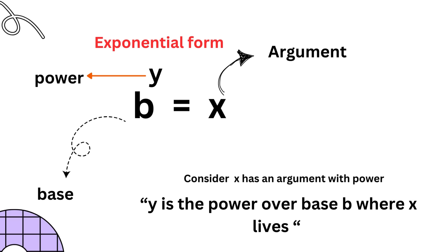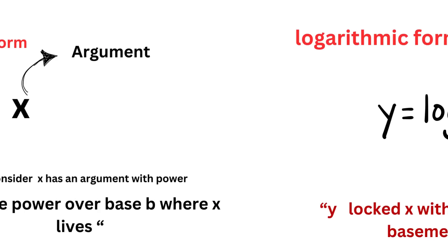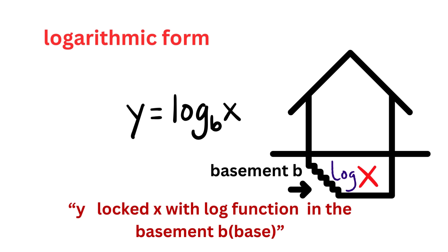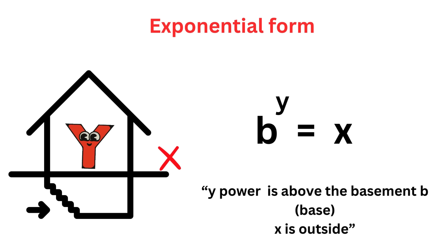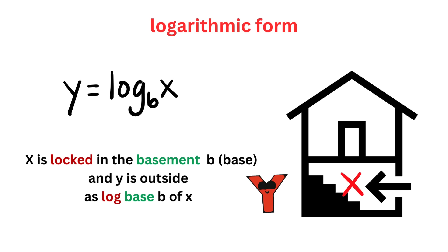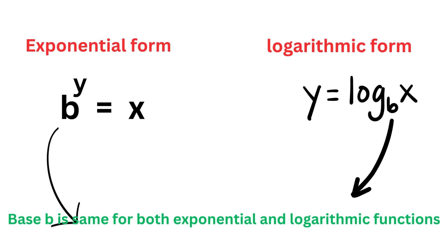Let's imagine a story to remember exponential and log form. Consider x as an argument with power y, as it has power over its base b — it locked x in the basement b. For exponential form, remember the phrase: y is the power over base b where x is outside. For log function: y locked x in the basement b, as y equals log base b of x. Base b is the same for both exponential and logarithmic functions.